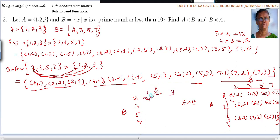2, 3, 5, 7. 1, 2, 3. That means (2,1), (2,2), (2,3). Here (3,1), (3,2), (3,3). (5,1), (5,2), (5,3). (7,1), (7,2), (7,3).